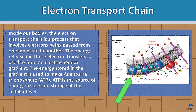The electron transport chain: inside our bodies, the electron transport chain is a process that involves electrons being passed from one molecule to another. The energy released in these electron transfers is used to form an electrochemical gradient. The energy stored in the gradient is used to make adenosine triphosphate — ATP is a source of energy for use and storage at the cellular level.